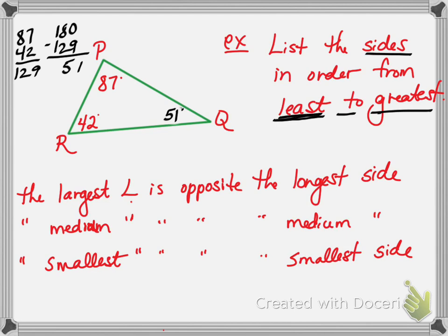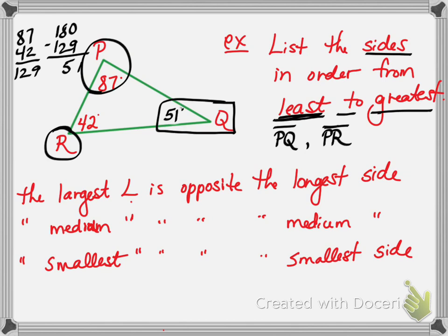And now we can put them in order, least to greatest. So the smallest side is going to be opposite the smallest angle. Opposite of it is PQ. Then the medium one—this is the medium angle. Opposite of that is PR. And this is our largest angle. Opposite of that is RQ.